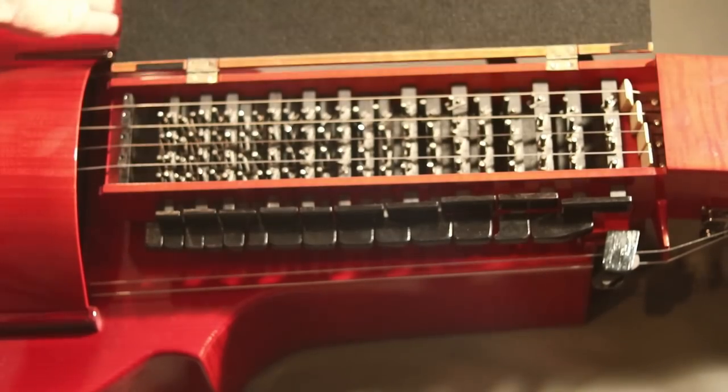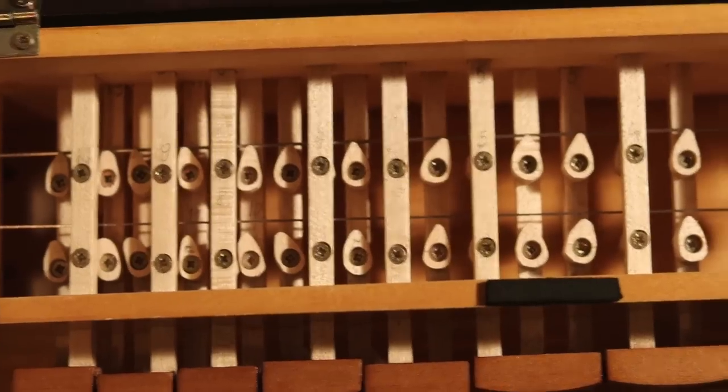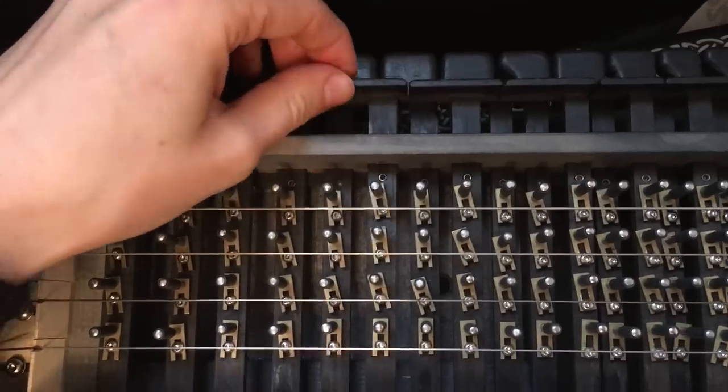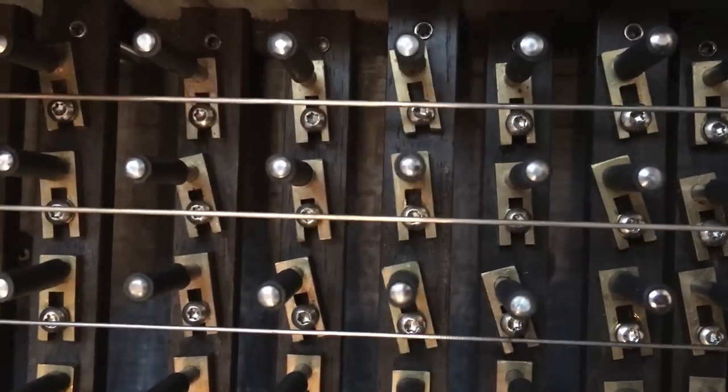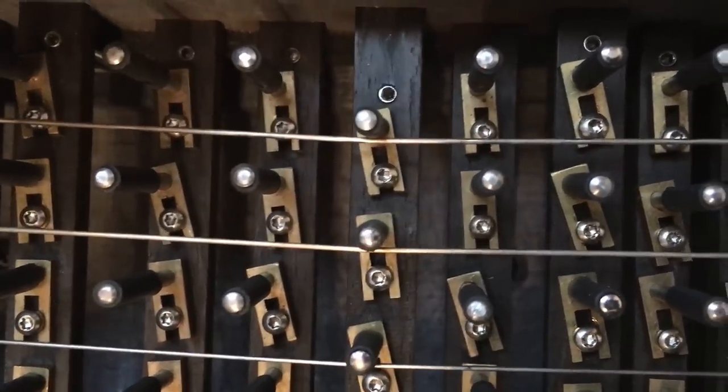The next thing is the tangent box with the keyboard. Tangents are fixed on the keys. When you press a key, the tangent hits the string and shortens it, which results in changing the note that the string is playing.